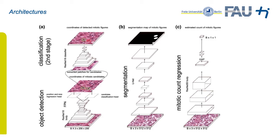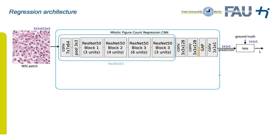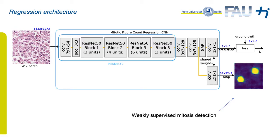The regression model was only the second best in performing the mitotic count, but has the advantage of requiring less specific training information — only the number of mitoses in the image needs to be known. By looking at the activations and using the same convolutional layer for class mapping, we can also use it for weakly supervised localization of mitoses, as shown here.